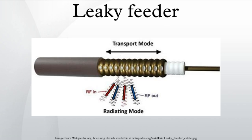Leaky feeder is also being used in warehouses and other industrial buildings where it is difficult to get WiFi coverage using normal access points. Real-life installations with 50 to 75 meters of leaky wire connected to the antenna input of access points exist and are working fine.